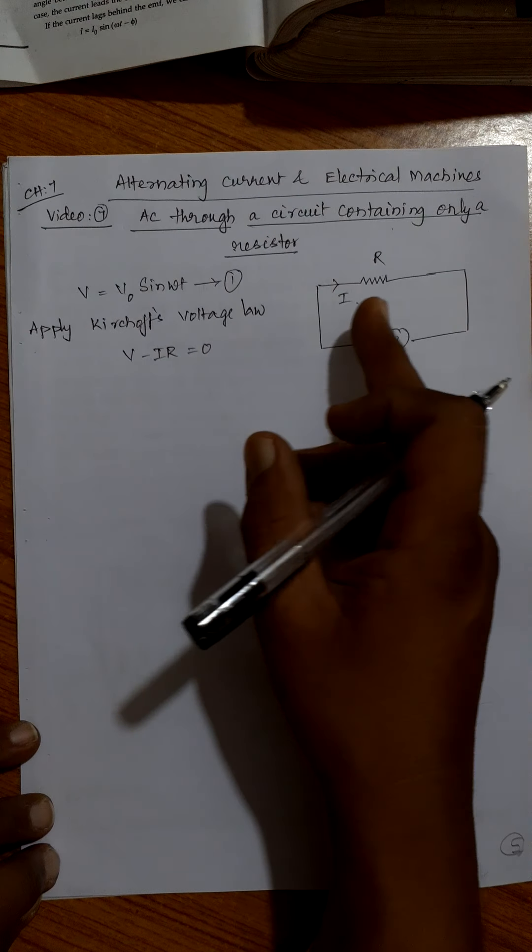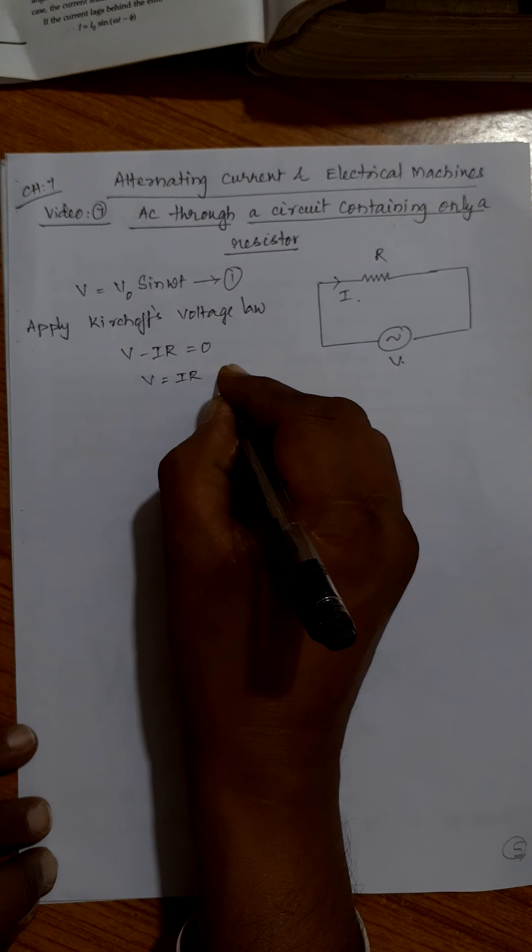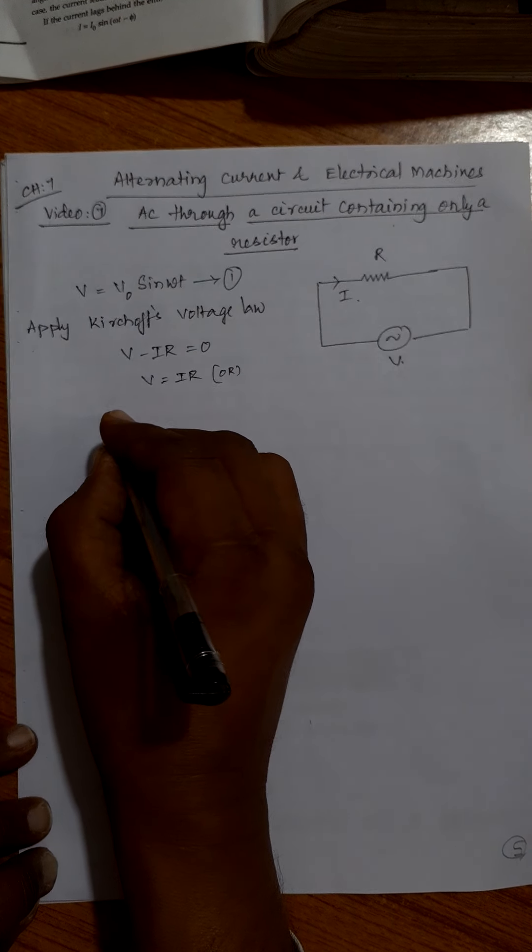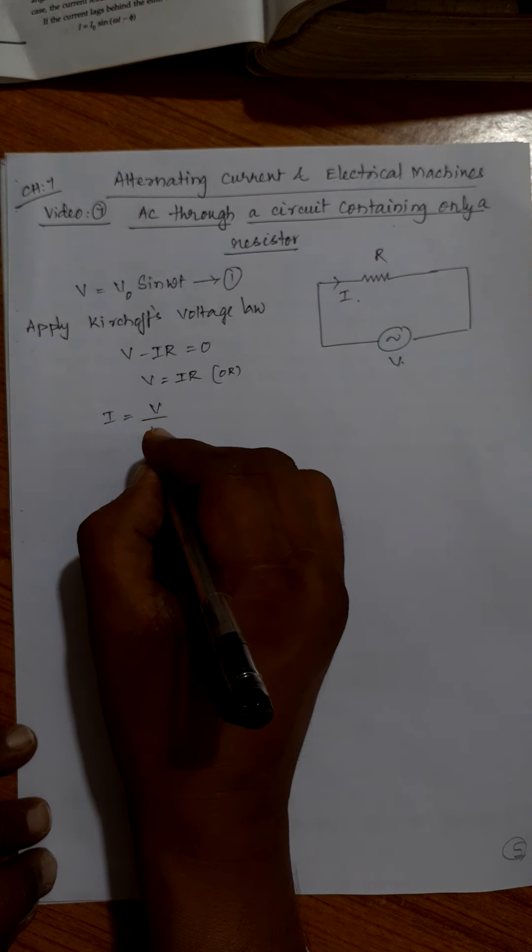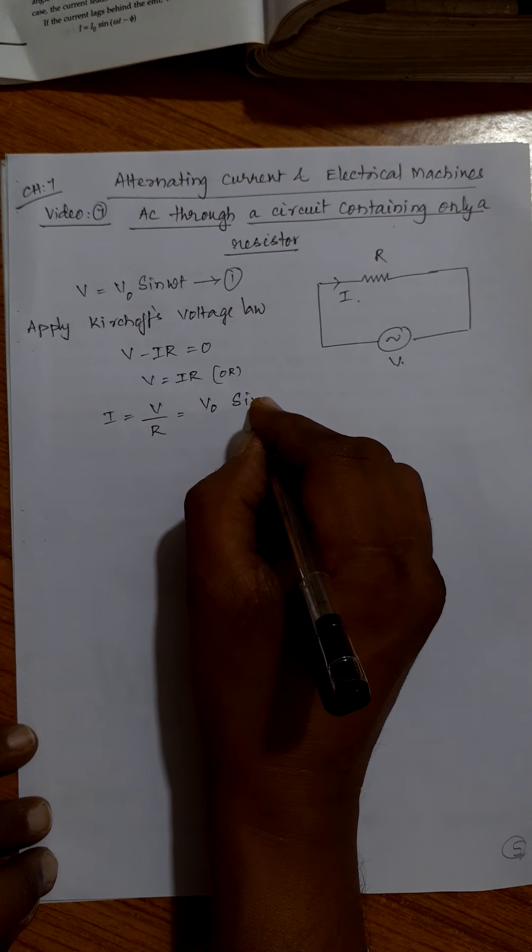Kirchhoff's voltage law states that sigma delta V is zero. So the algebraic sum of potential drops in a closed circuit must be zero. V minus IR is zero, so V equal to IR. I can write I equal to V by R.